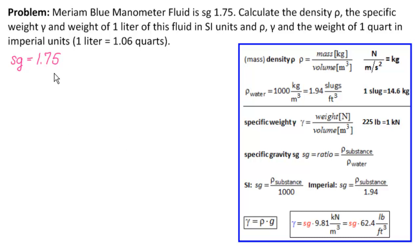We know that SG is the ratio of the density of the fluid to the density of water. So what we know is that ρ of our fluid equals ρ of water times SG. And we can find that formula right here. The ρ of our substance is ρ of water times SG. So we know that ρ of water is 1,000 kg/m³, times 1.75, no units there. And we get 1,750 kg/m³. So that's the answer to that part of the problem.